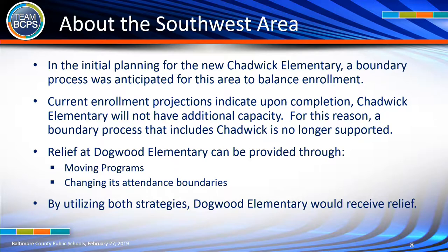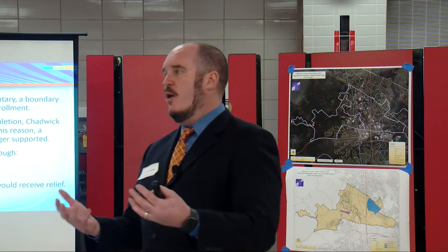In the southwest area, Chadwick Elementary is in the process of being improved and expanded. A boundary process was anticipated for this area to help balance enrollment. However, current enrollment projections indicate that upon completion, Chadwick Elementary is not going to have much additional capacity — the additional space is going to help resolve the overcrowding problems that currently exist there. For this reason, a boundary process that includes Chadwick is not supported because there is no available space to help out neighboring schools.